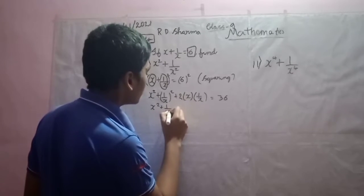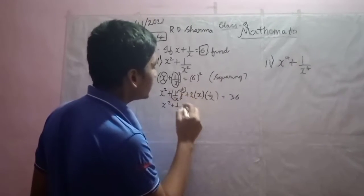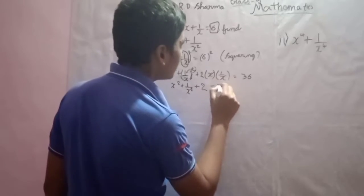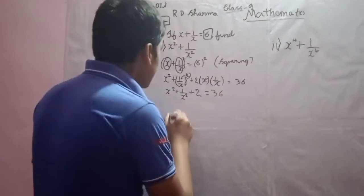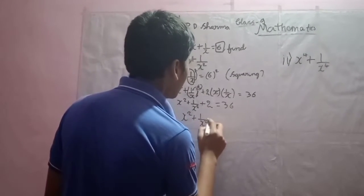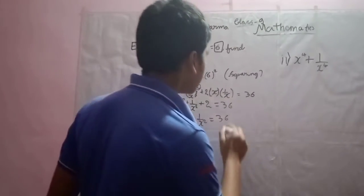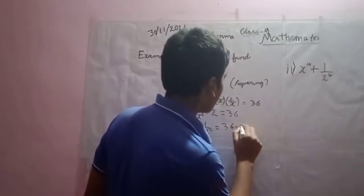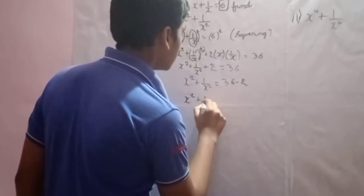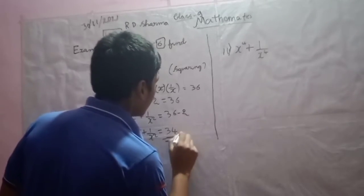This equals 6 squared, which is 36. Now x squared plus 1 by x whole squared can be written as 1 by x squared, since squaring applies to both numerator and denominator. The x and x cancel, leaving plus 2 equals 36. So x squared plus 1 by x squared equals 36 minus 2, which gives the final answer of 34.